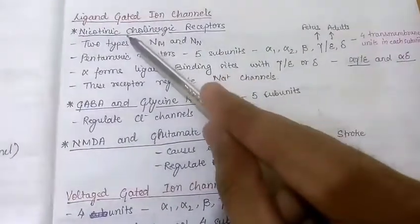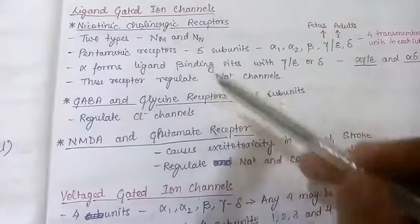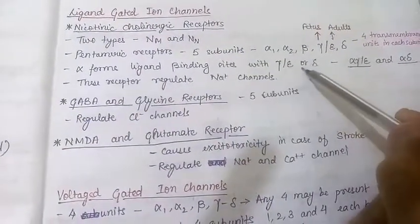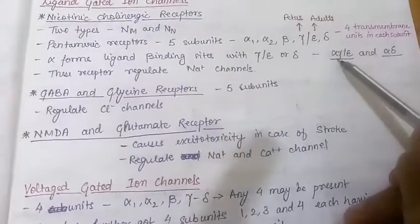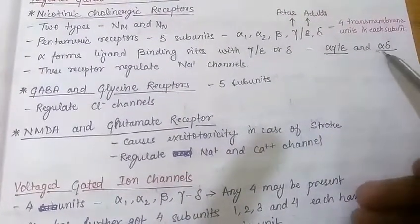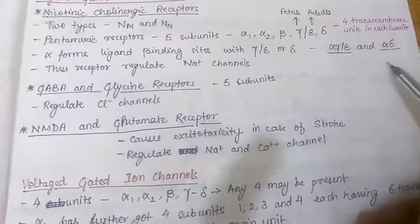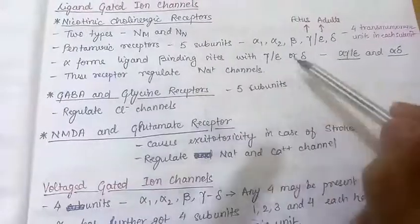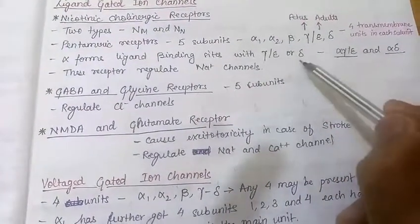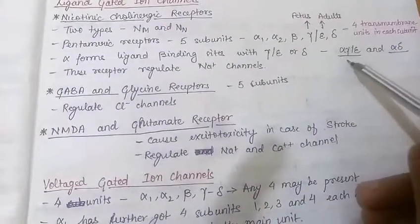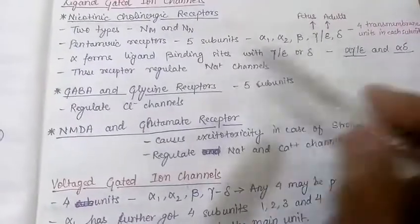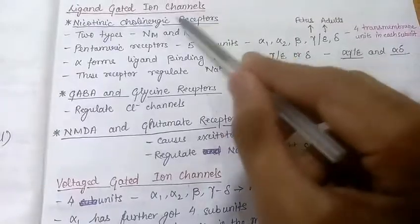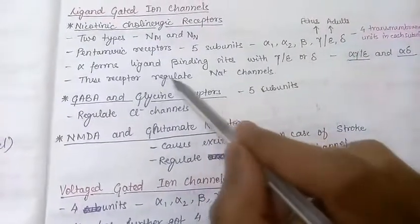Alpha forms the ligand binding site with gamma or delta. This creates two binding sites for two acetylcholine molecules — alpha combines with either gamma or delta to form these two binding sites. These receptors regulate sodium influx, so this receptor is responsible for sodium influx.